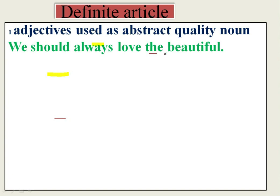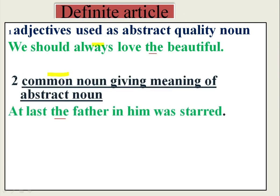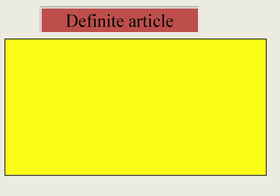Adjectives can represent abstract quality nouns with the use of the definite article. 'We should always love the beautiful' — 'beautiful' is an adjective, but with 'THE' it takes the shape of a noun and becomes an abstract quality noun. When we use the definite article before a common noun, it can give the meaning of an abstract noun. 'The father in him was stirred' — 'father' is a common noun, but with 'THE' it changes into an abstract noun, not referring to a physical father.